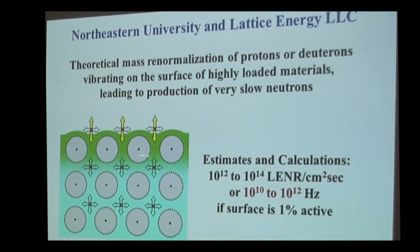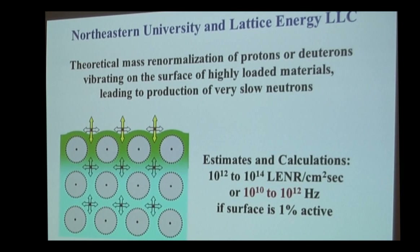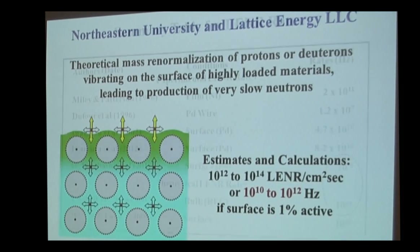This is the Wood and Larson model of the surface — vibrating protons or deuterons on the surface that couple with plasmon polaritons and so forth. They published rates of 10 to the 14th, but with the argument that only 1% of the surface is active, giving a lower effective rate. This analysis is incomplete in a couple of ways; I saw in the tritium panel yesterday a couple of papers I should have added.